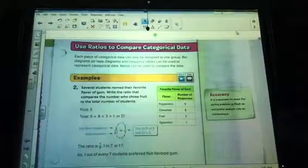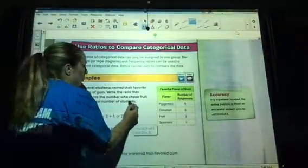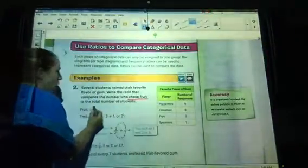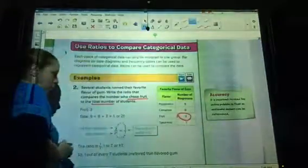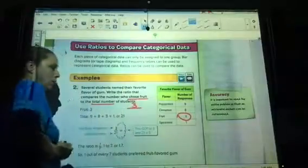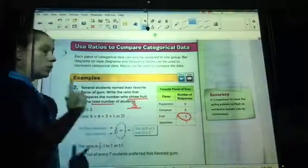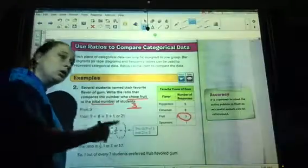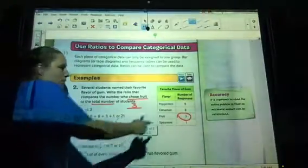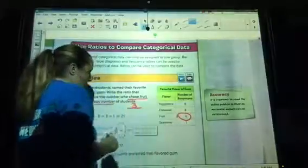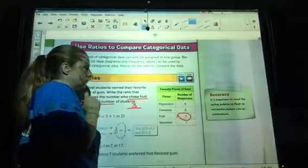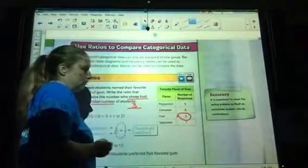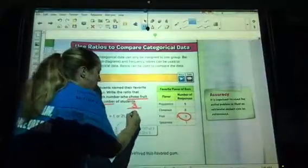So if we want to talk about the number who chose fruit over the total, then we have to look at fruit, which is here. So your top number is going to be three. Number of fruit, because it's listed first, it's got to go first, to the total. Now, total includes those that like fruit gum. So we have to take nine plus eight, which is 17 plus three, 20 plus one, 21.